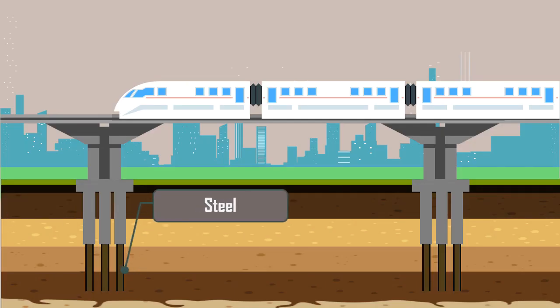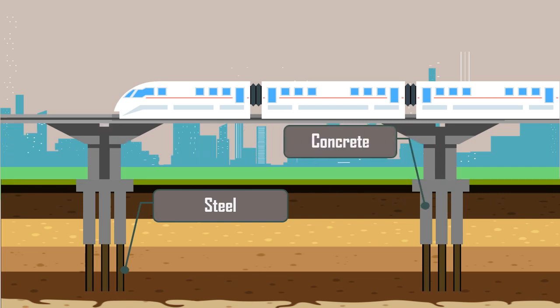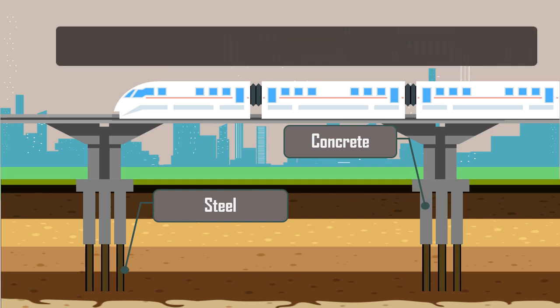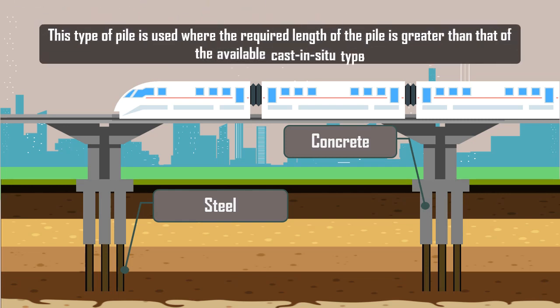In another type of composite piles, steel piles are attached to the lower end of cast-in-situ concrete piles. This type of pile is used where the required length of the pile is greater than that of the available cast-in-situ type.